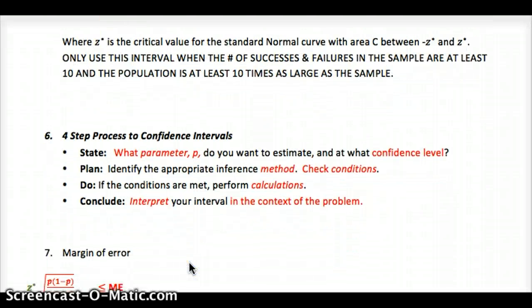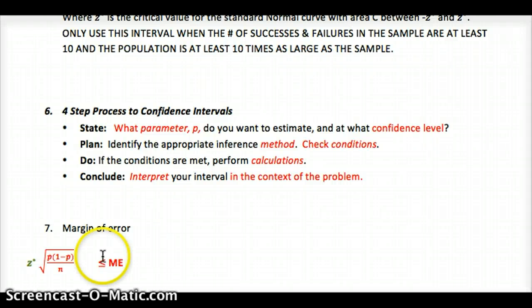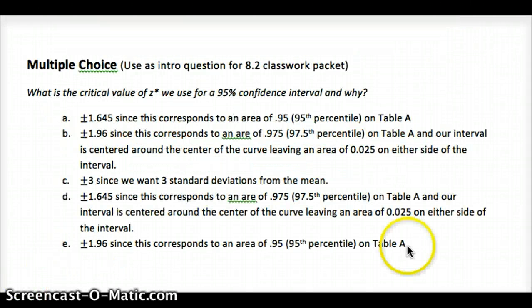So again, here's our formula for margin of error. Go back on any of this you need, and here's your multiple choice question. What is the critical value of Z star? Remember, we write Z star for critical value in a confidence interval for a 95% confidence interval on Y. So please pause the video here. Look over the outline for 8.1, 8.2. The vocab and my outline version of it is both in Schoology, and then answer the multiple choice in the free response below.